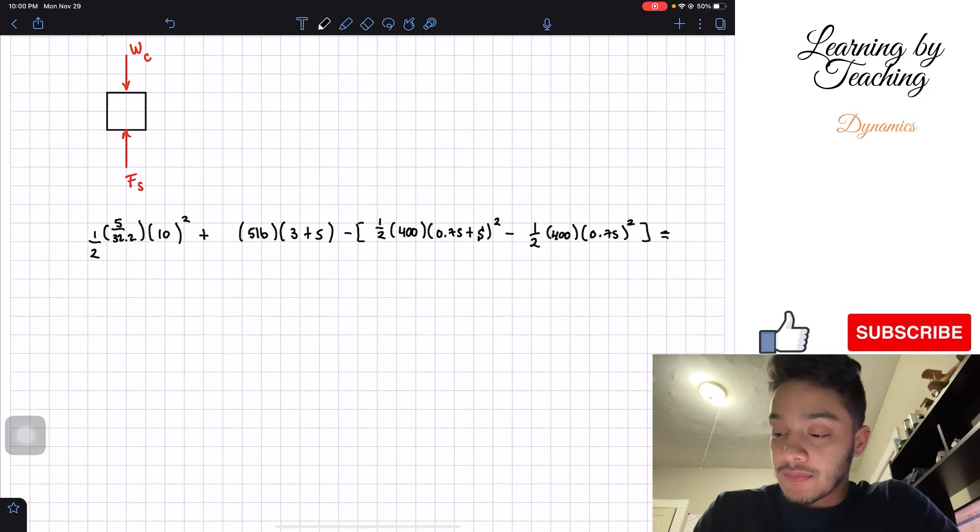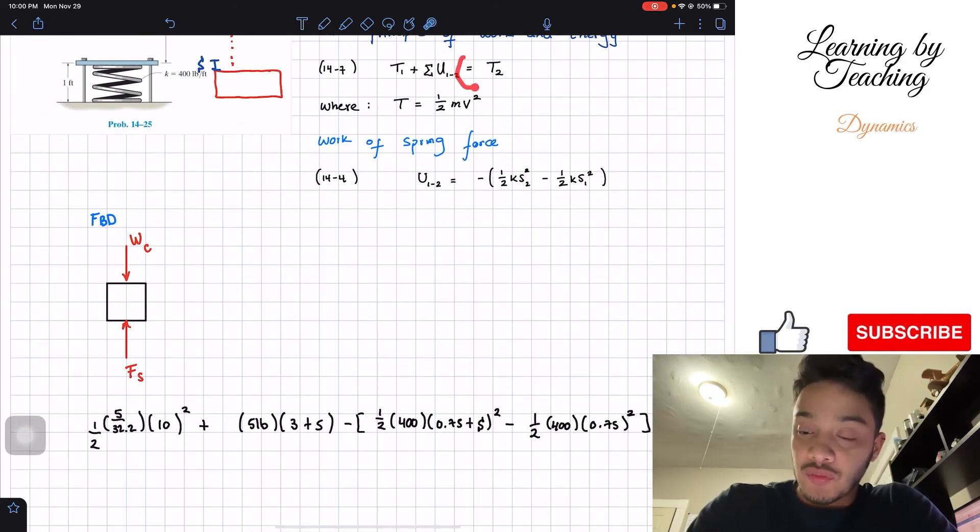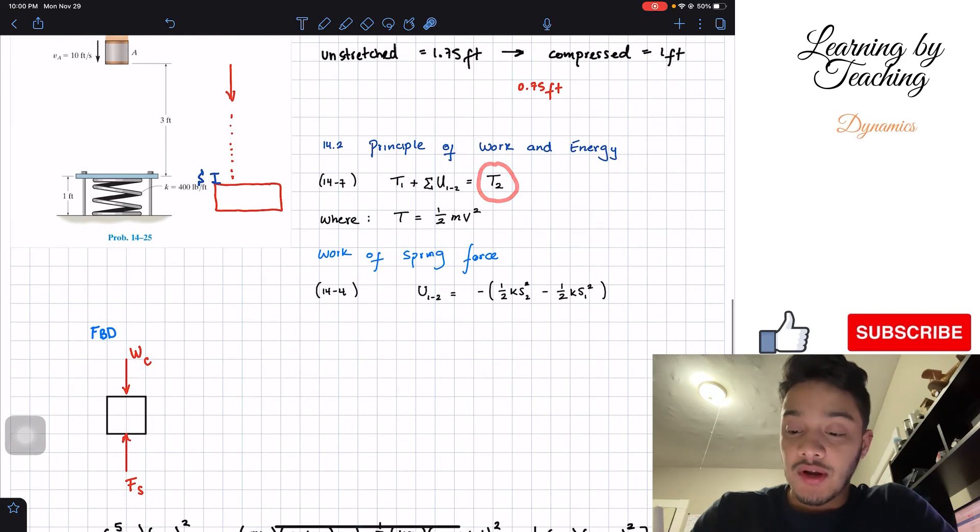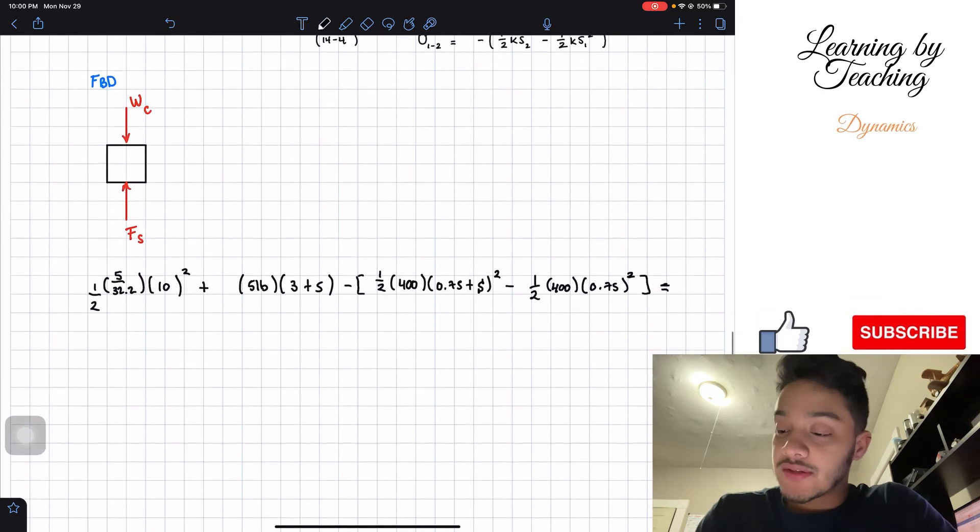Initially it was compressed to 1 feet, meaning that again we have this compression of 0.75 already given to this spring force and we are going to square this. So now this should be equal to the kinetic of our final. However, our final as we stated before, the velocity is going to be equal to zero, therefore my right side of the equation will be equal to zero.